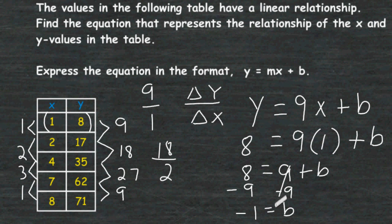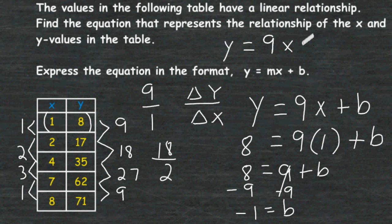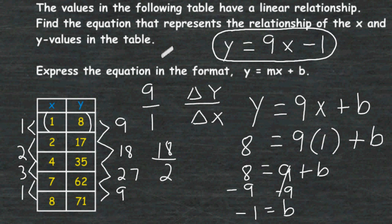The b value is equal to negative 1. We plug that into our original equation. When writing in y equals mx plus b format, y stays as y and x stays as x, since those values change depending on the point. The m value stays as 9 and b is negative 1, so we write minus 1. This is the equation representing the relationship between x and y in our function table. We can check by plugging in x values.